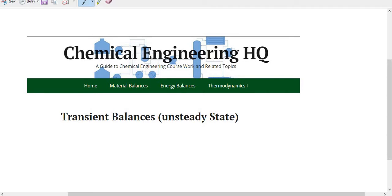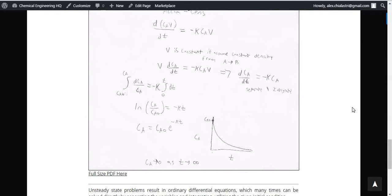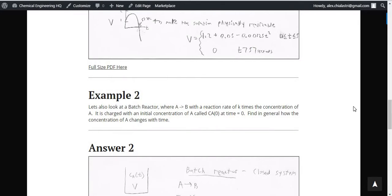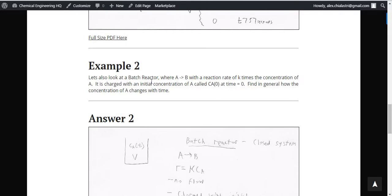Today in chemical engineering, we'll be looking at unsteady-state material balances. The problem we'll be looking at is Example 2. We're going to look at a batch reactor where A goes to B with a reaction rate of K times the concentration of A. It's charged with an initial concentration Ca0 at time equals zero, and we want to find in general how the concentration of A changes with time.